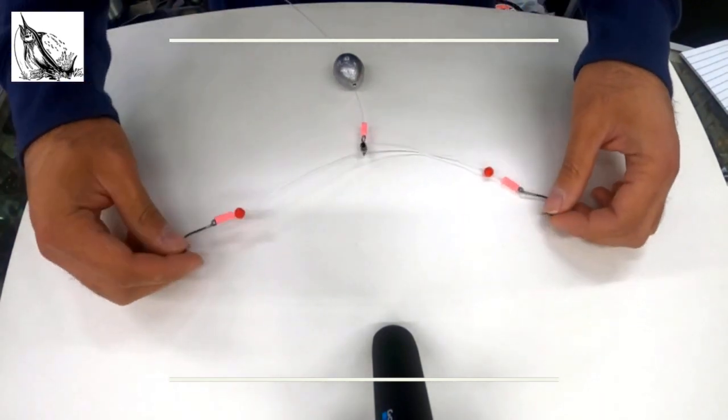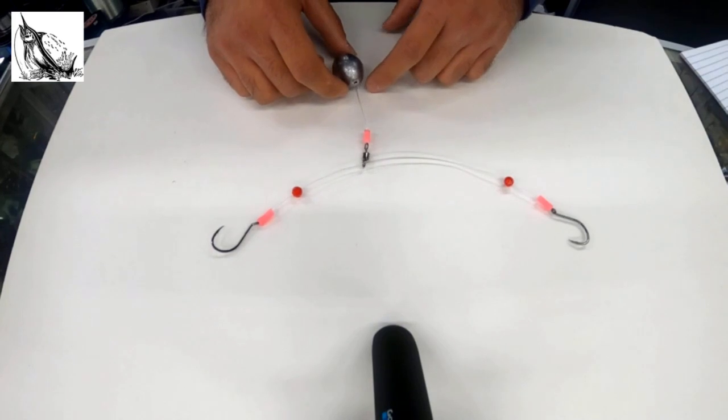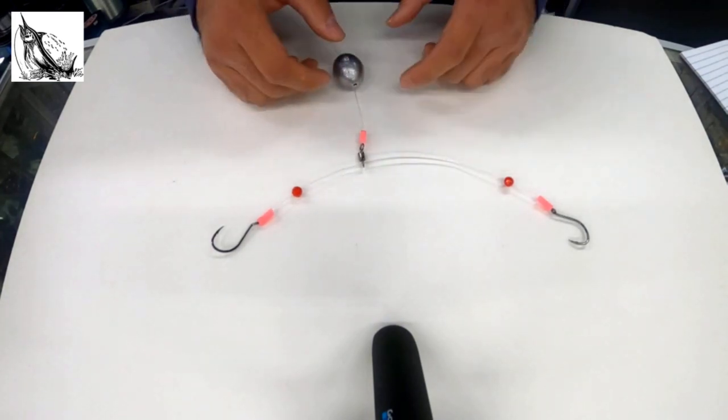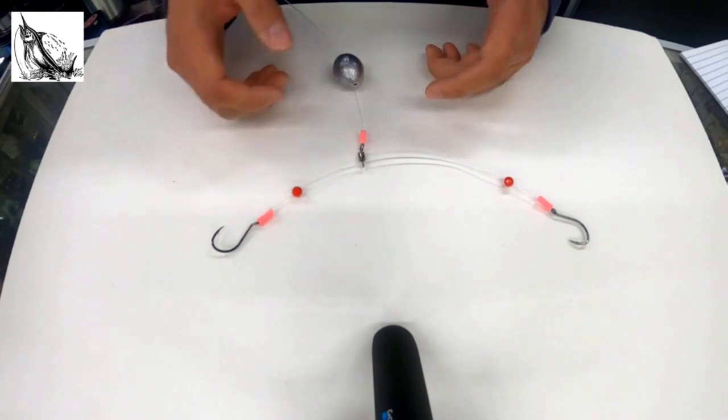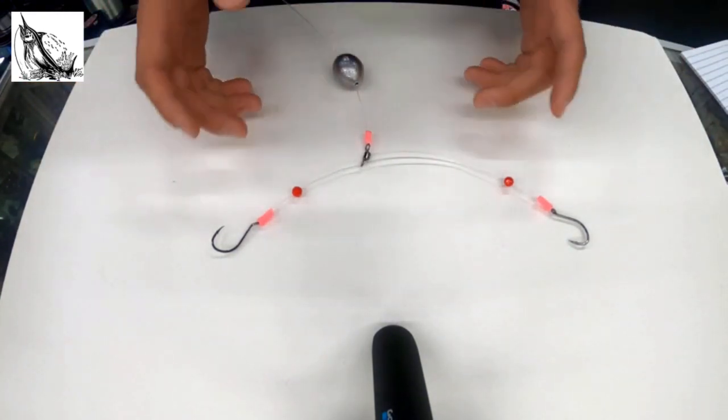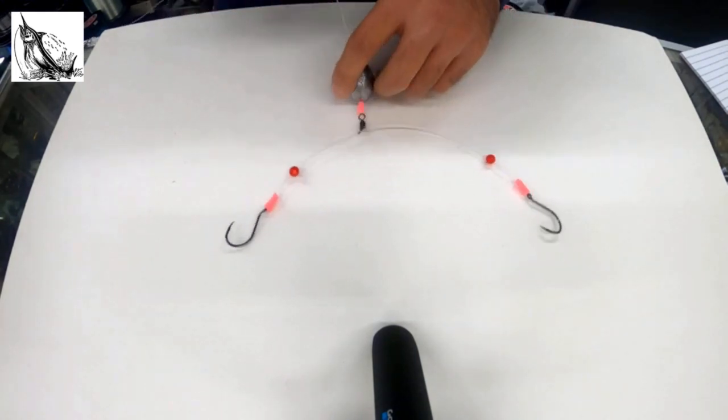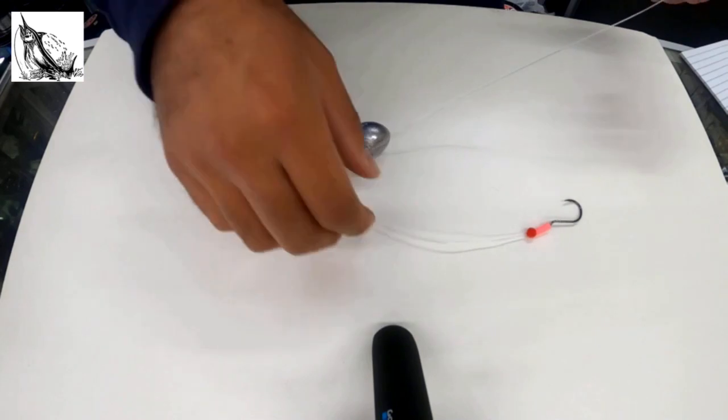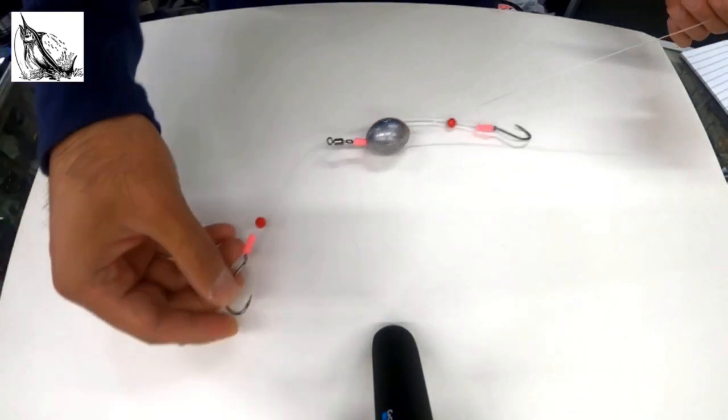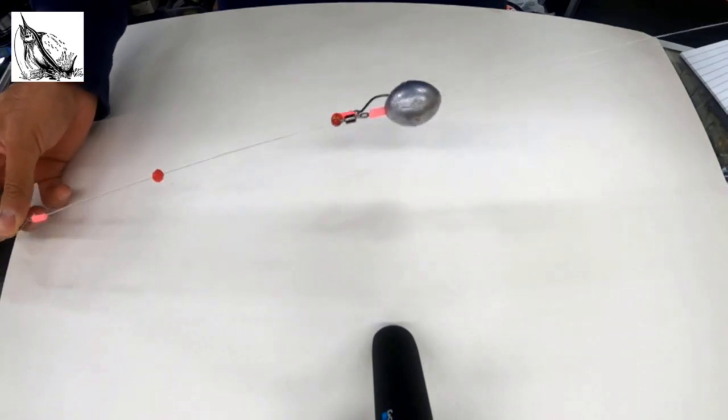The biggest threat when you're fishing for tog is after you get a hookup, you get snagged on structure and end up losing your fish and your rig. You lose everything, you don't get anything back in return. This rig here alleviates that pressure beautifully. What happens is on a hookup, the one hook on the fish will be pulling out and this will stand straight out.